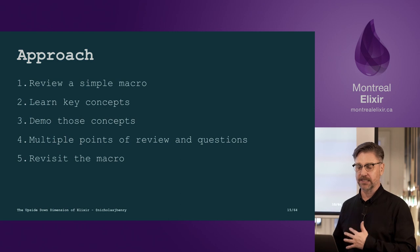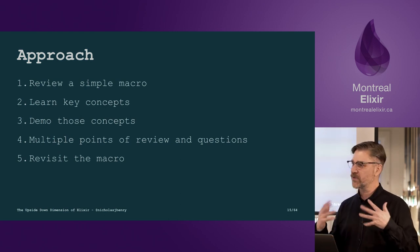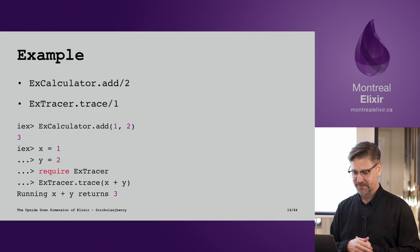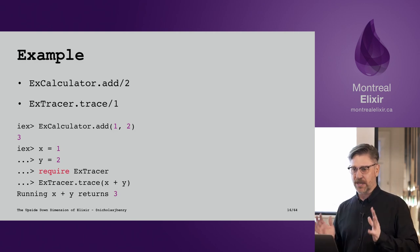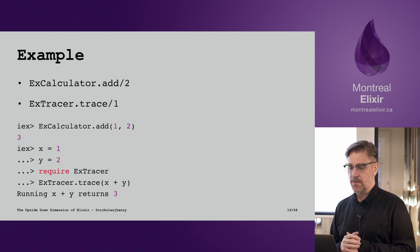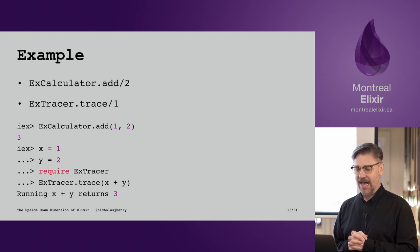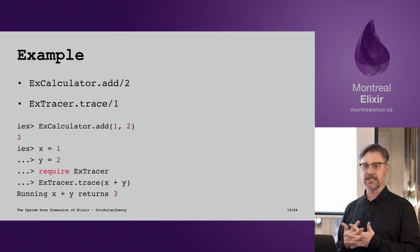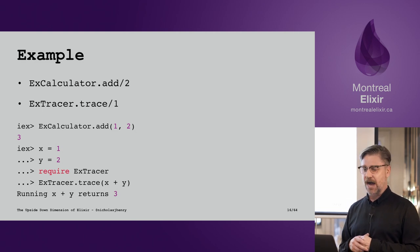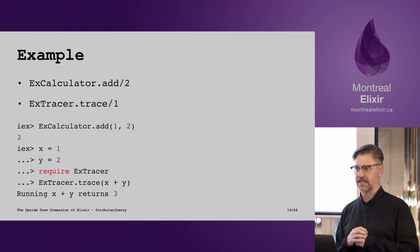Once we've covered those basic concepts, we'll go back and revisit that macro, and reading through it we should have a better understanding of how it works. It's a very basic example: we have a calculator module that adds two numbers together, and a tracer module that traces the code being executed and outputs a string showing the line of code and the result.